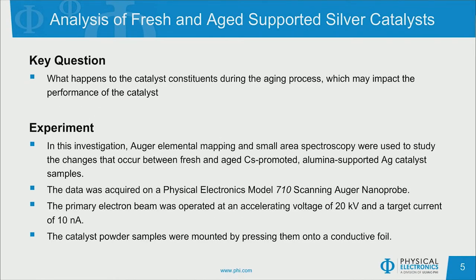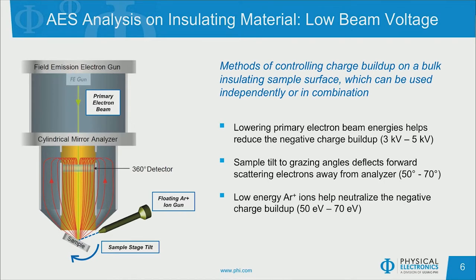The purpose of this study was to answer the question: what happens to a catalyst during the aging process, and how that may affect the performance of the catalyst? In this investigation, we performed Auger elemental mapping and small area spectroscopy to study the changes that occur between a fresh and aged, cesium-promoted, alumina-supported silver catalyst sample. This data was acquired on a Physical Electronics model 710 scanning Auger nanoprobe. The primary electron beam was operated at an accelerating voltage of 20 kilovolts and a target current of 10 nanoamps. To help mitigate the charging issues, the catalyst powder samples were mounted by pressing them onto a conductive foil.